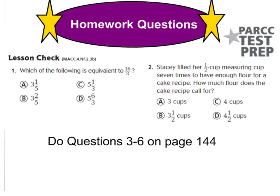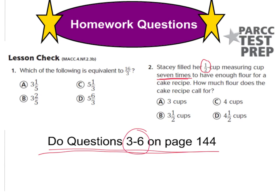Friends, we're on page 144 for our homework questions. Number 1 is asking you to find which mixed number is equivalent to 16 thirds. Number 2 says Stacy filled her 1/2-cup measuring cup 7 times — it's very important that we know it's 7 times — to have enough flour for a cake recipe. How much flour does the cake recipe call for? You'll need to figure out the improper fraction if she has 1/2 cup 7 times, then change that to a mixed number. Make sure you do all the questions on page 144, so numbers 3 through 6 also.